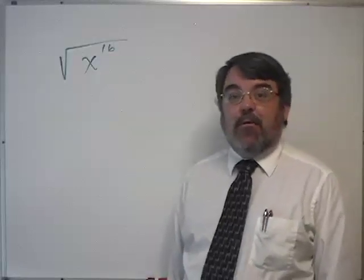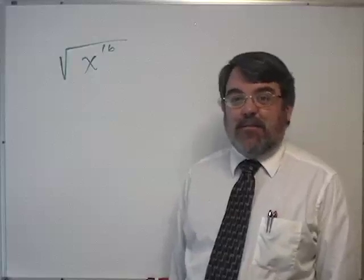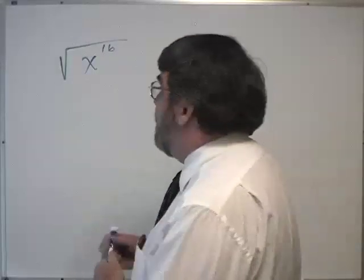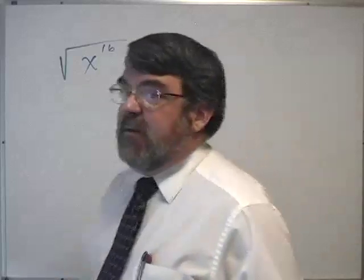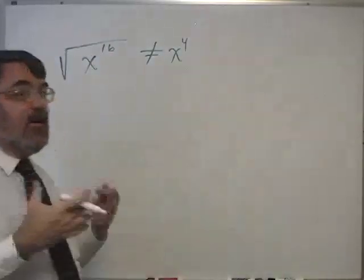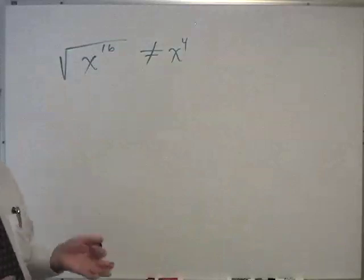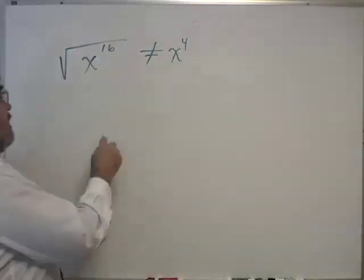It's not x to the fourth power. What if it was? Well, what does it mean to take a square root? To check a square root you square your number back, so x to the fourth squared equals what?